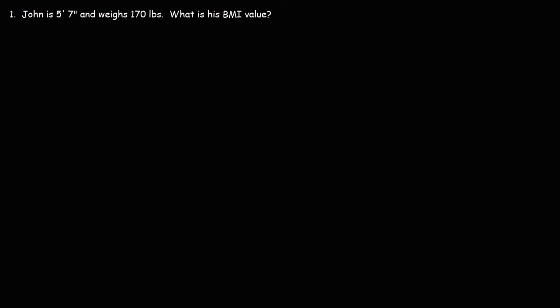In this lesson, we're going to talk about how to calculate BMI, a person's body mass index. The formula we're going to use is this one: BMI is equal to a person's body weight divided by the square of the person's height.